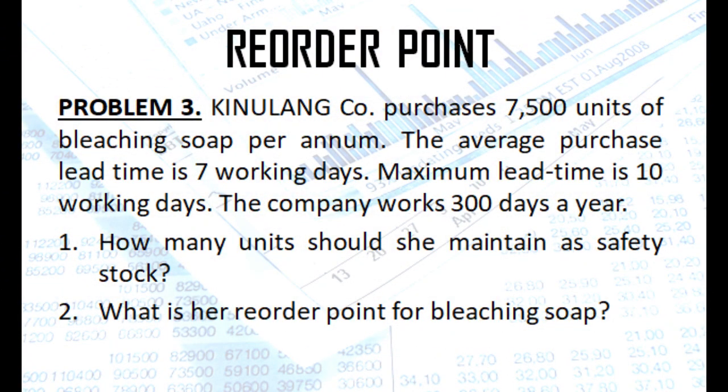Let's go now to our third problem, which pertains to reorder point. Kinulang Company purchases 7,500 units of bleaching soap per annum. The average purchase lead time is 7 working days. Maximum lead time is 10 working days. The company works 300 days a year. Question number 1, how many units should she maintain as safety stock? Number 2, what is the reorder point for bleaching soap?